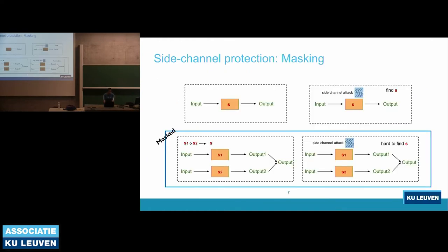As a protection, masking is a well-known countermeasure against side-channel attacks. In the unmasked version, a cryptographic algorithm uses a secret key S, taking input and producing output. If an attacker probes only once and uses side-channel information regarding S, they can find S using that extra information from the device executing the cryptographic algorithm.